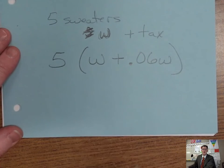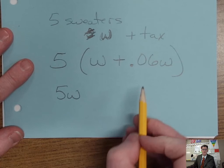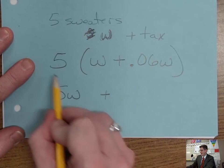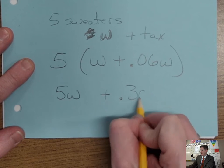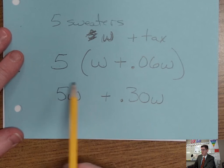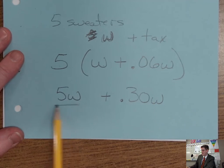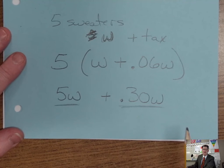And then if we're to expand that, we can multiply the five times the w. And then we can add to that five times 0.06, and the calculator will give you 0.30w. Then it's expanded. It's the same thing. You're just talking about the five sweaters' cost and then the tax for all the sweaters on top of that.